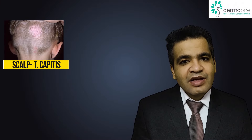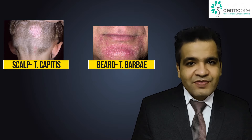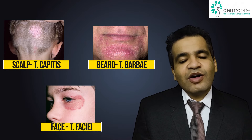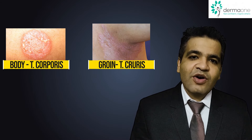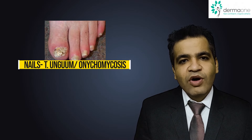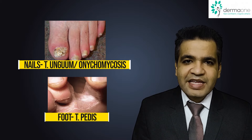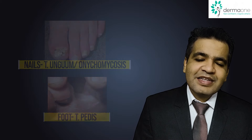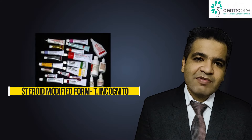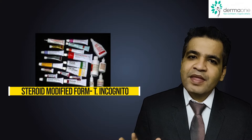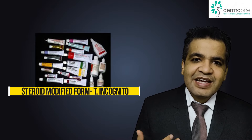Depending on the site that is infected, it has different names. On the scalp it is called tinea capitis; on the beard, tinea barbae; on the face, tinea faciei; on the body, tinea corporis; on the groins, tinea cruris; on the hands, tinea manuum; on the nails, tinea unguium or onychomycosis; on the feet, tinea pedis. There is also a special variety called tinea incognito, where applying a steroid cream on the affected area makes the fungal infection very difficult to recognize.